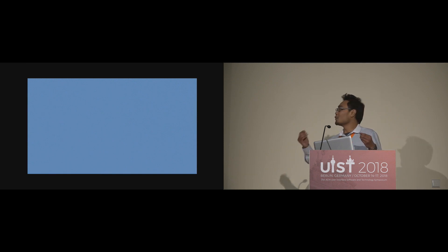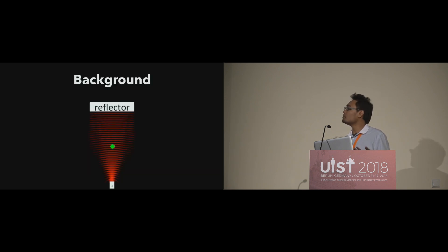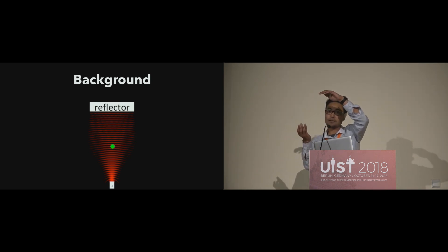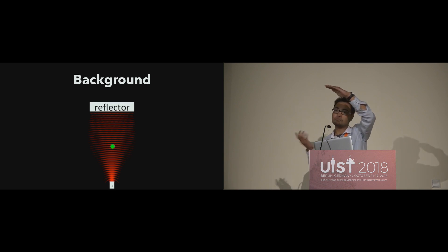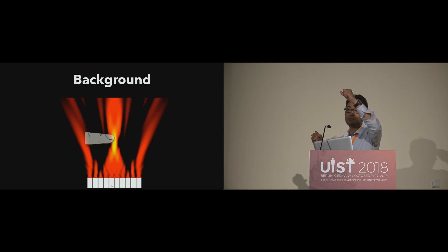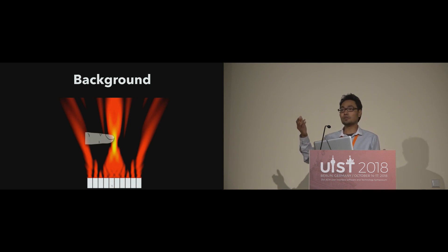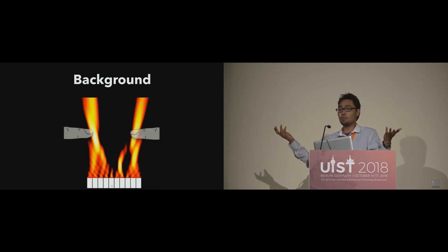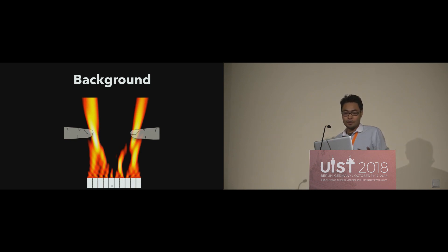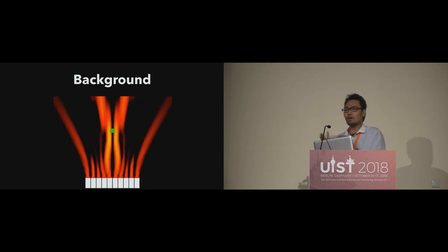So how did we come up with this solution? Let me first introduce you to the existing approaches that have been around in sound fields. For example, if you have one transducer and a reflector on top, you can create levitation by having a standing wave. You can also increase the number of transducers to create a focal point, which can create haptic feedback — this is what ultra-haptics does. You can increase the complexity by creating multi-focal points to create mid-air haptic objects like a sphere in the air.